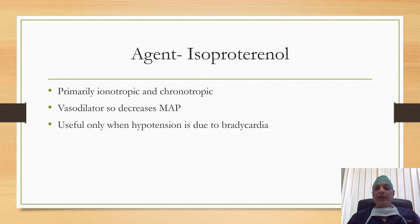Isoproterenol is mainly an inotropic and chronotropic agent and is similar to dobutamine, but its beta-2 action is more pronounced, so it causes a decrease in blood pressure. It is useful only when hypotension is due to bradycardia.